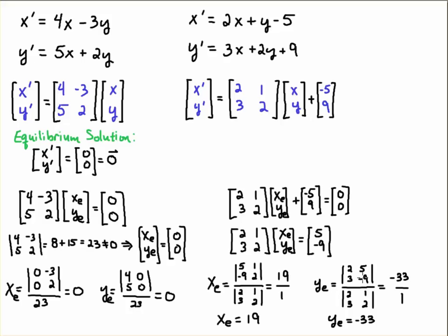So we get for the equilibrium solution for this system, we get x, the x equilibrium solution is 19 and the y equilibrium solution is minus 33. And so let me just summarize the results here.